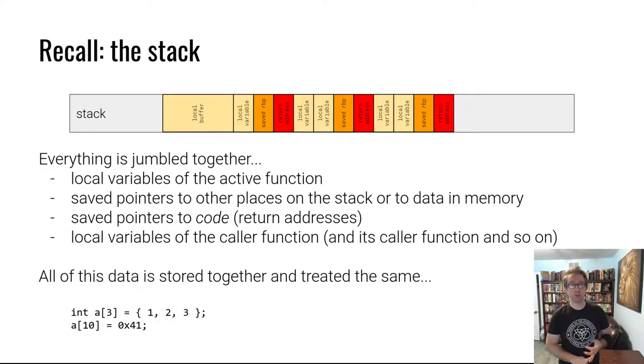saved pointers to other places in memory, for example the saved base pointer for the stack, save pointers to code that are later used to return from the function, and further up the stack local variables of the caller function, the function that called that function and so on. There's a lot of data on the stack and it's all stored together and treated exactly the same,